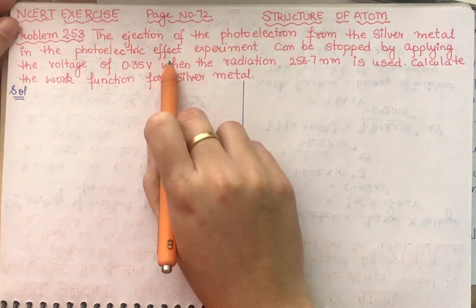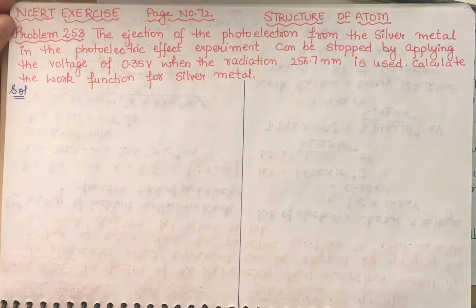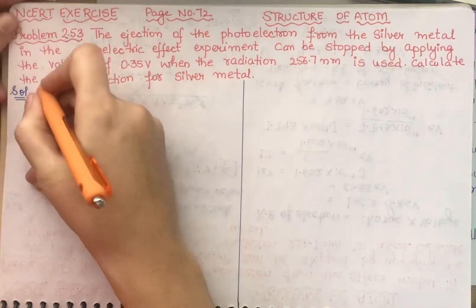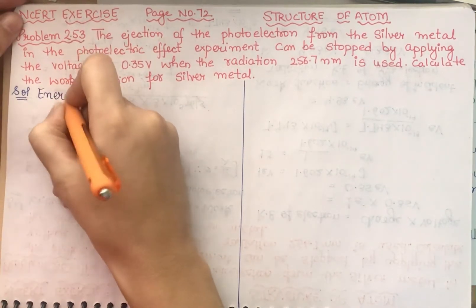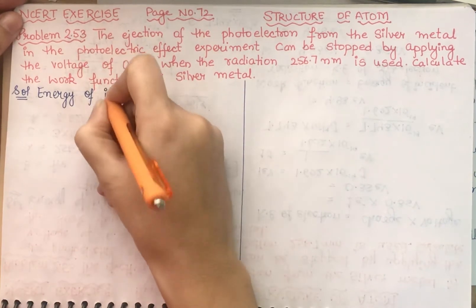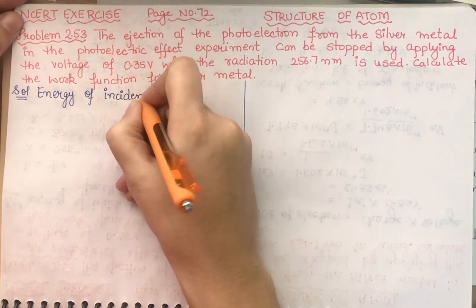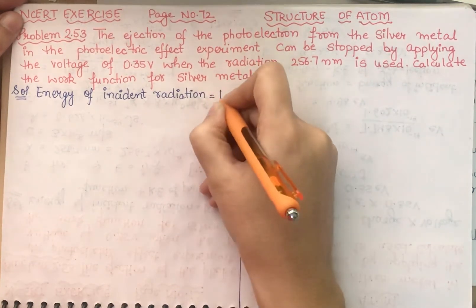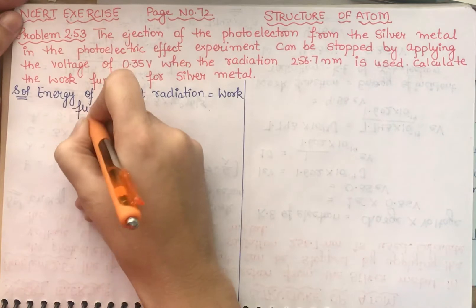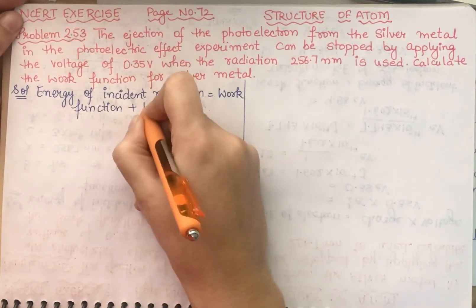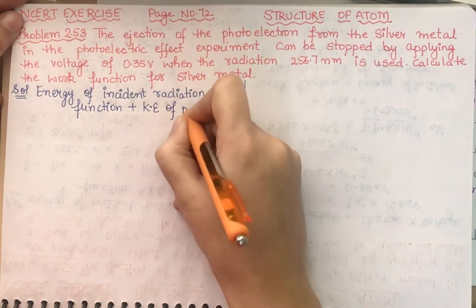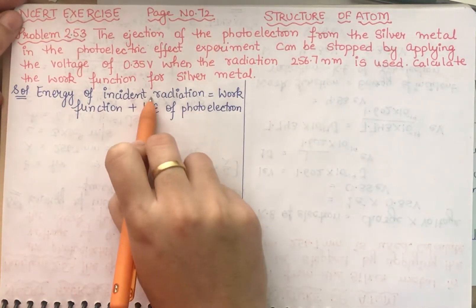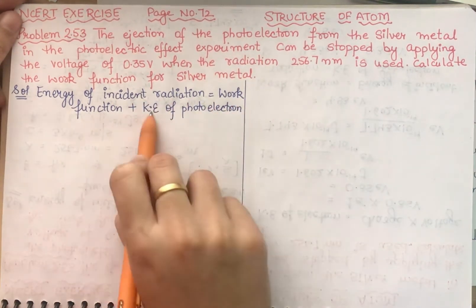Given this condition, we need to find the work function for silver metal. First, let's see the formula — what is the energy of a photon? The energy of incident radiation equals the work function plus the kinetic energy of the photoelectron.